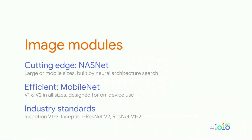In general, we have lots of image modules on TF Hub — ones straight out of research papers like NASNet, ones great for production, ones made for on-device usage like MobileNet, plus industry-standard ones like Inception and ResNet.